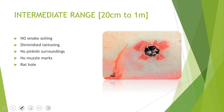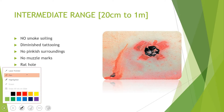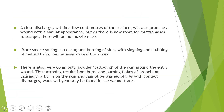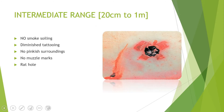Moving on to the wound characteristics of wounds caused by smoothbore firearms or shotguns. At intermediate ranges, which range from 20 centimeters to 1 meter, specific wound features are observed.